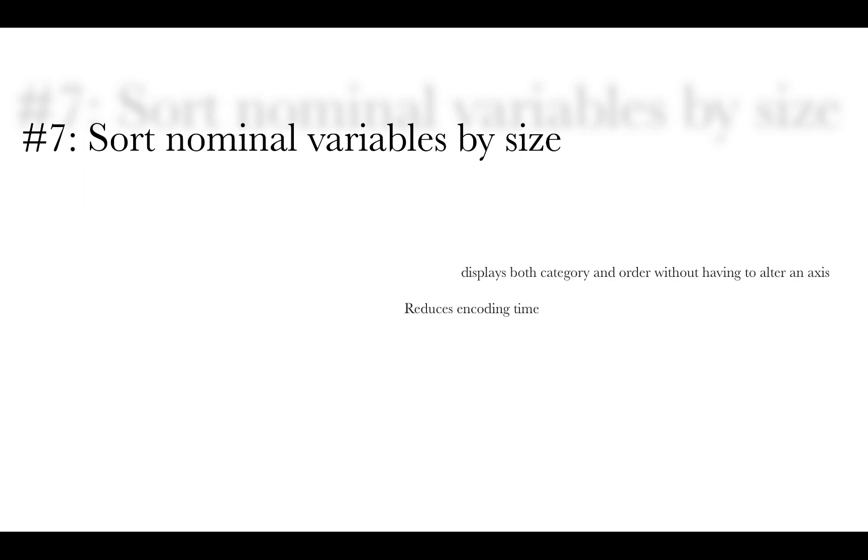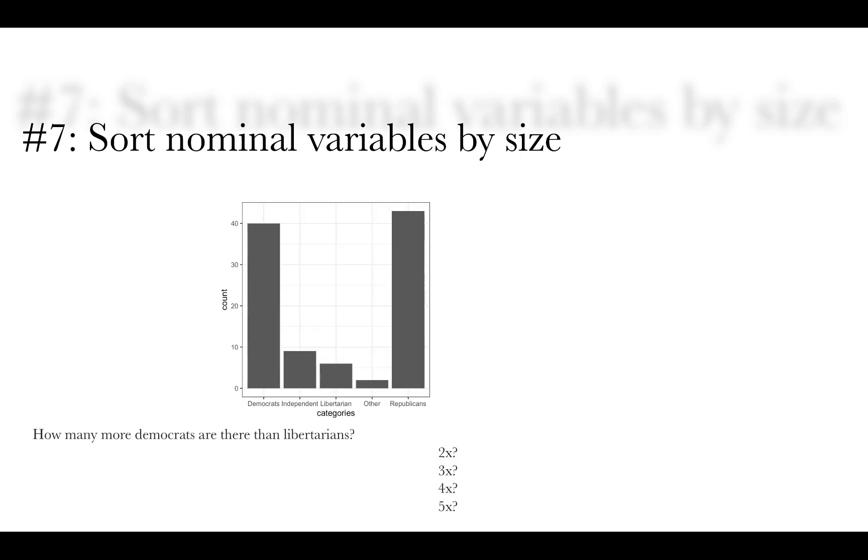And then number seven, sort nominal variables by size. So when you sort on the x-axis according to size, it displays both the category and the order without having to alter the axis. So you're doubling the amount of information, and by so doing, you also reduce encoding time.